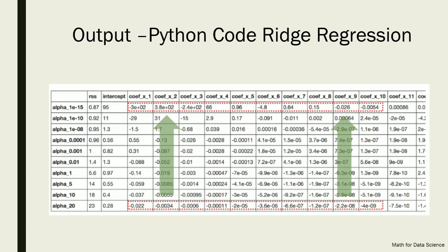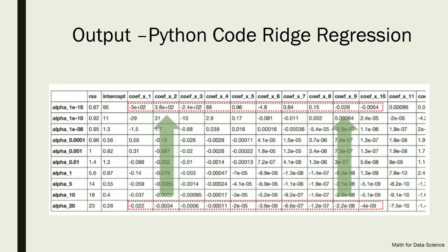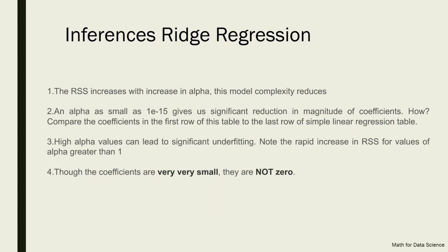The key point: in L2/ridge regression, none of the coefficients ever becomes zero. The inferences are: RSS increases with increasing lambda, model complexity reduces, and even a small alpha like 1e-15 gives a significant reduction in the magnitude of coefficients. High alpha values can lead to significant underfitting, but the coefficients are always very small — never zero. This is the most important property of ridge regression.